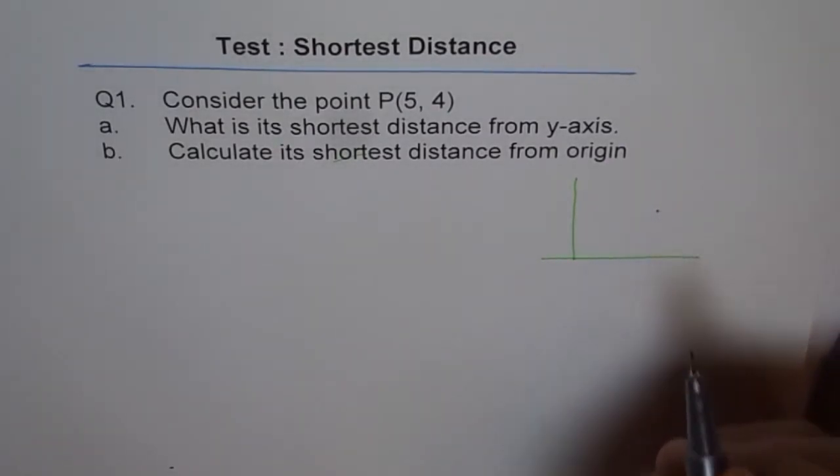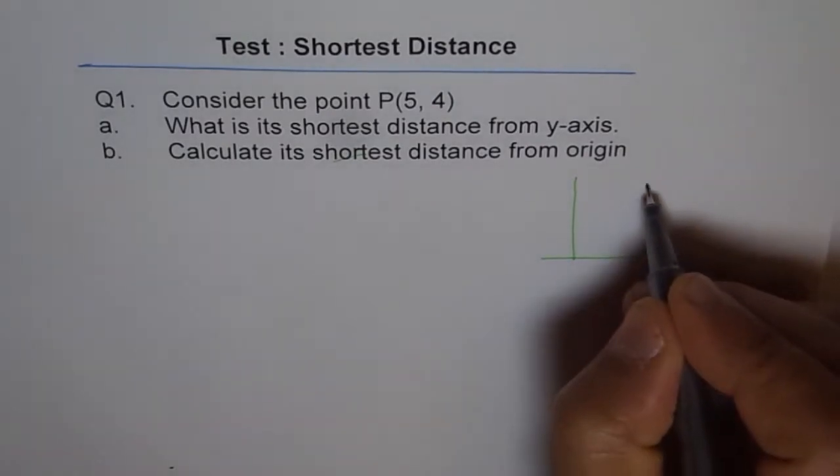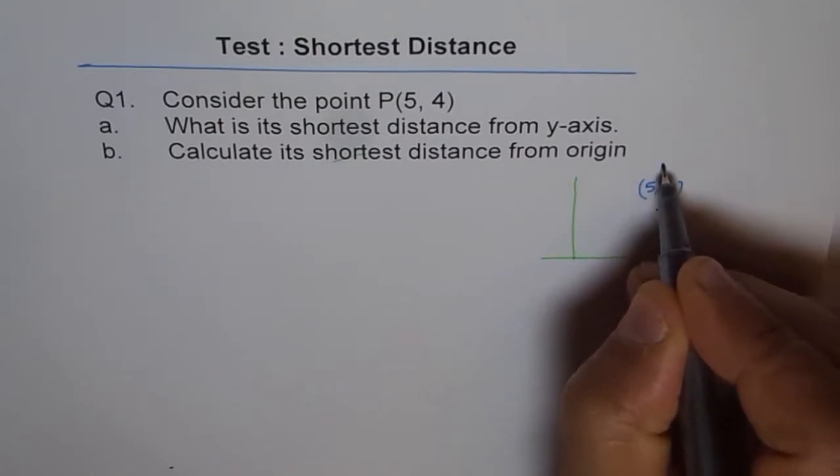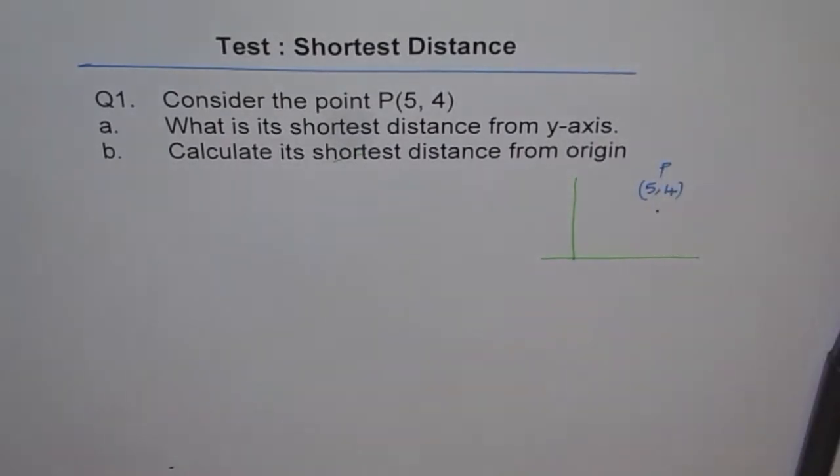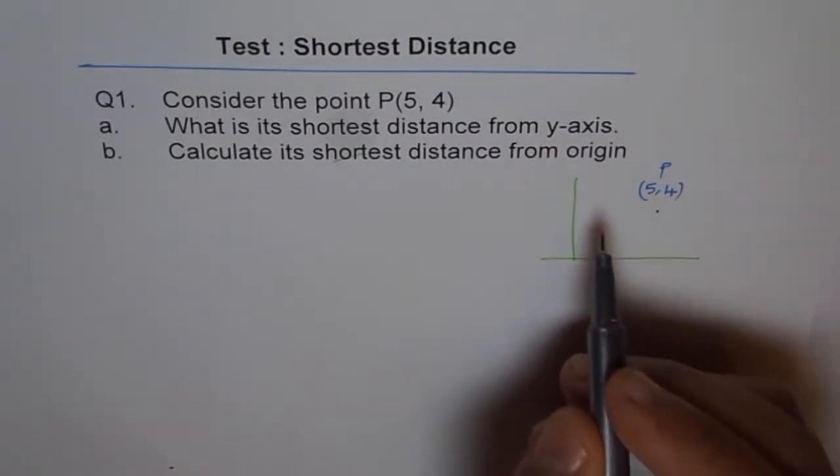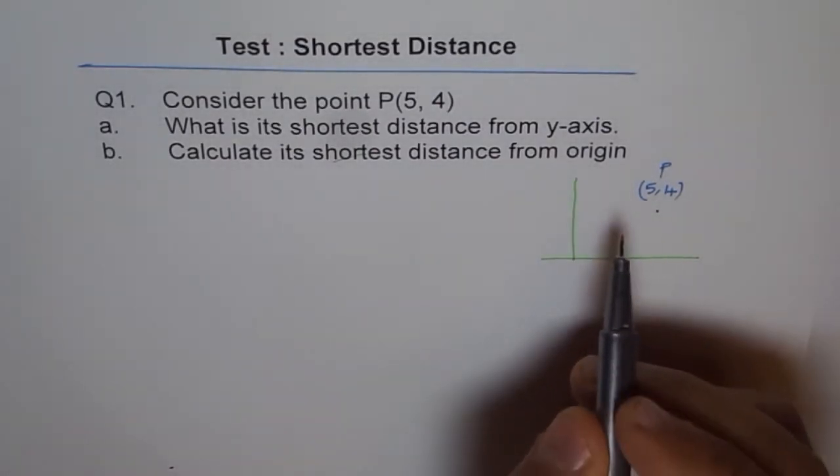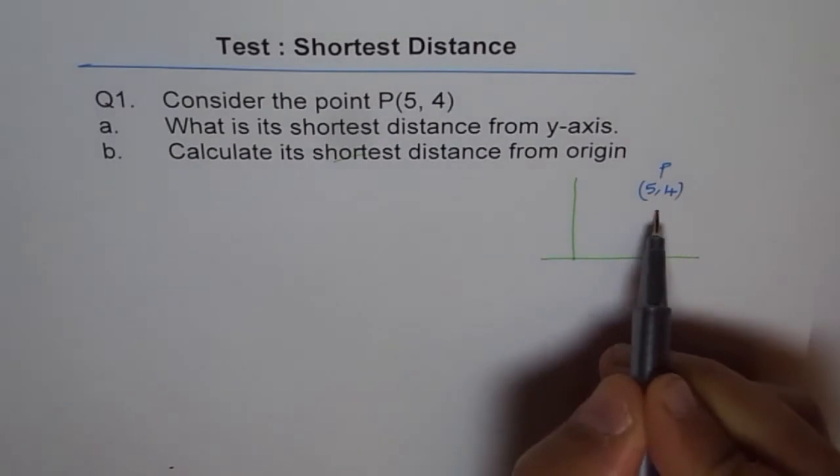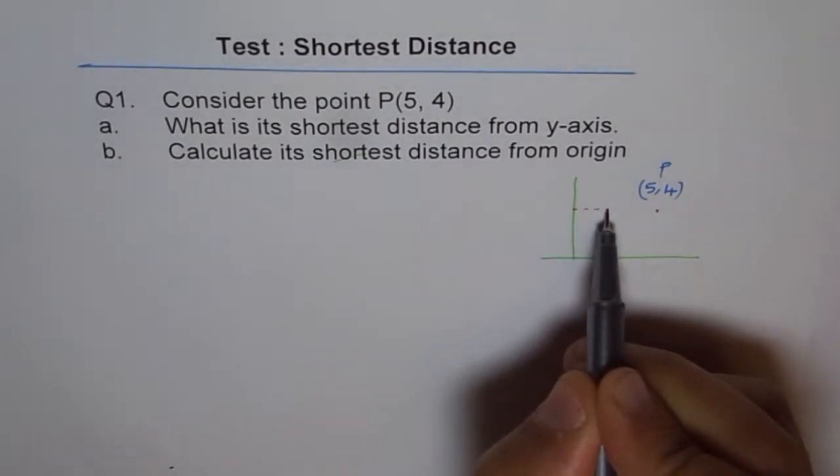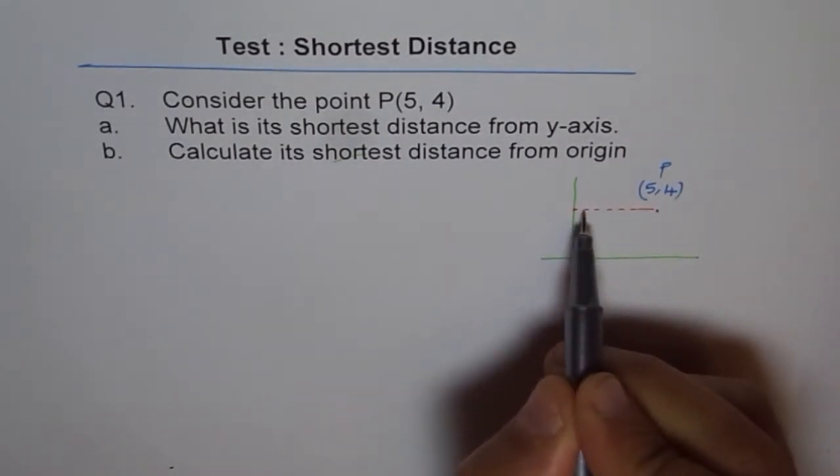5, 4. Let's call this point P which is 5, 4. Now what is the shortest distance from y-axis? You know this is y-axis. The shortest distance will be perpendicular to y-axis, correct? Like this. So this distance is the shortest distance from y-axis, correct?